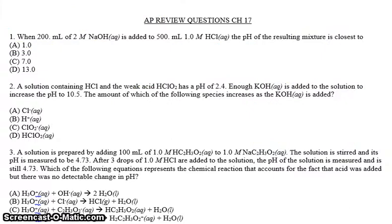Okay, question 2. It says, a solution containing HCl and the weak acid HClO2 has a pH of 2.4, enough potassium hydroxide, the strong base, is added to the solution to increase the pH to 10.5, the amount of which of the following species increases as the KOH is added. So we're asking what goes up. Now, Cl- won't increase, because Cl- came from a strong acid. A strong acid is already dissociated completely, so the amount of Cl- is the same throughout the whole thing.